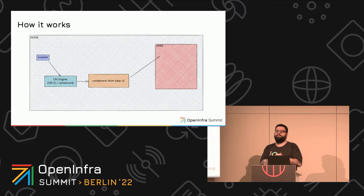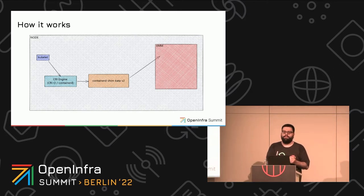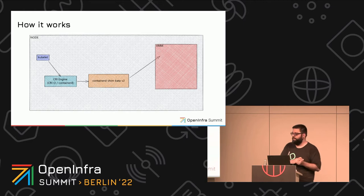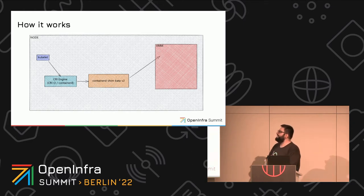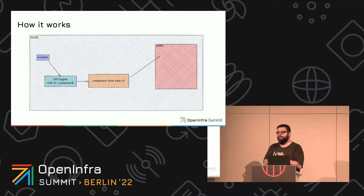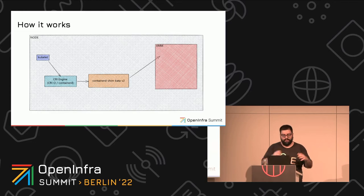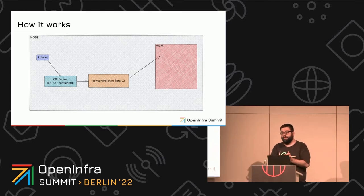On Kata Containers we have support for three different VMMs that we test in CI. QEMU, which I guess everyone is familiar with and was the first one we started using. We have support for Firecracker, which relies on Rust VMM. And we also have support for Cloud Hypervisor, a project from Intel from my team, also based on Rust VMM but really tailored for cloud use cases.